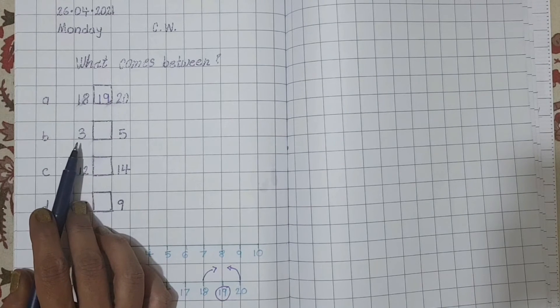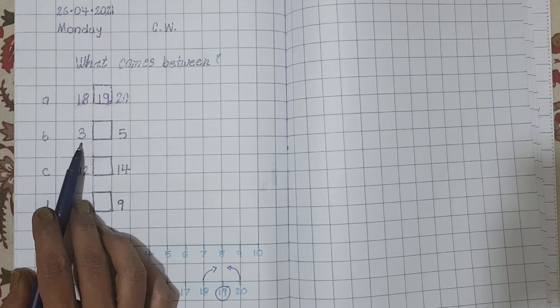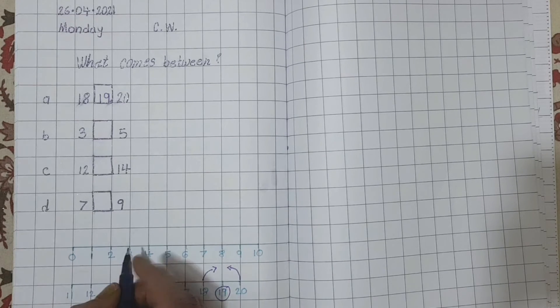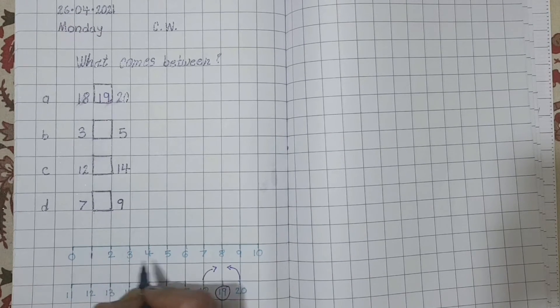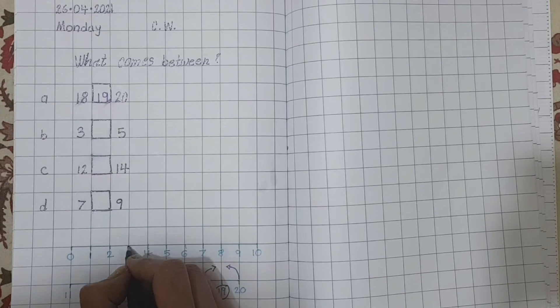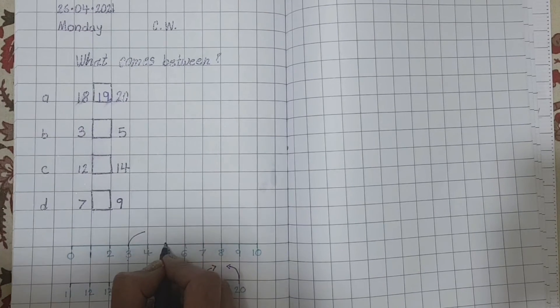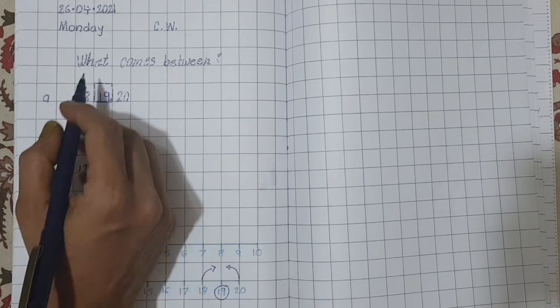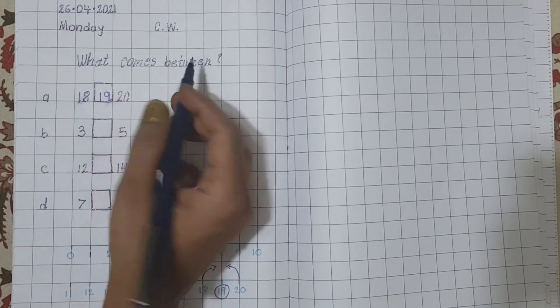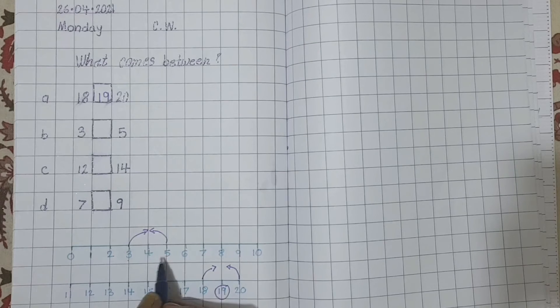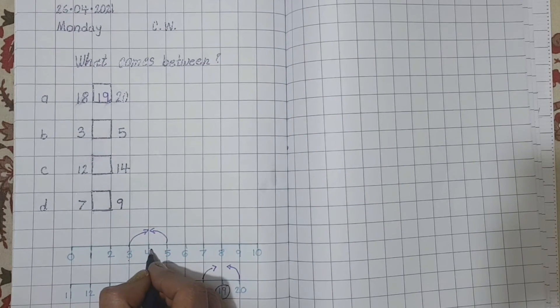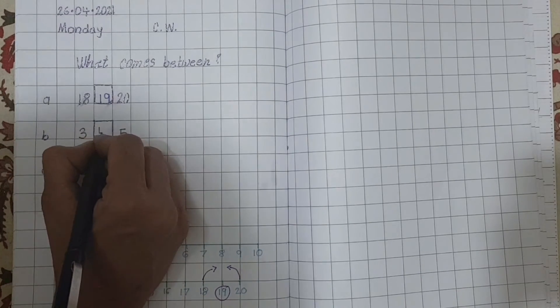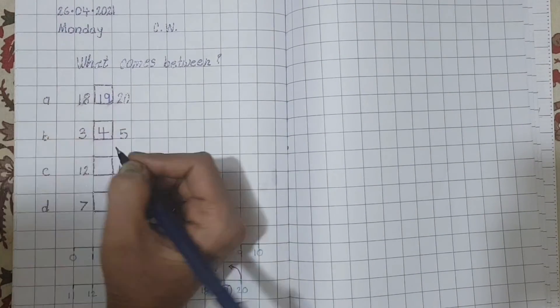Next is number 3 and number 5. Where is number 3? Here. And where is number 5? Here. So, can you tell me what comes between 3 and 5? Right. Number 4. So, write number 4.